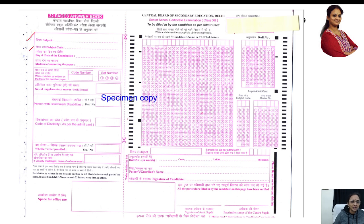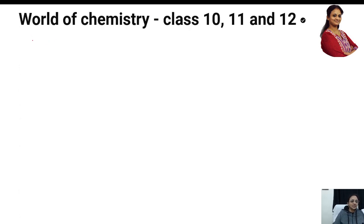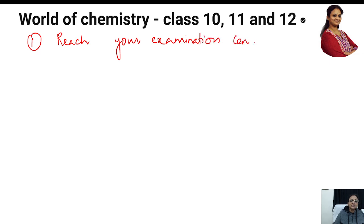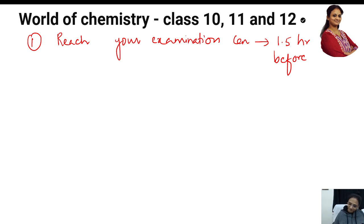Whatever I am explaining here, I want everyone to remember three important things and understand carefully before you sit in the examination hall. Your first important thing: reach your examination center at least 1.5 hours before the exam. If you reach early, your mind, your dopamine levels, everything will be under control — your examination tension and anxiety will come under control.